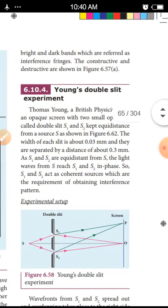Bright and dark bands, which are referred to as interference fringes, are visible. The constructive and destructive interference are shown in the diagram.